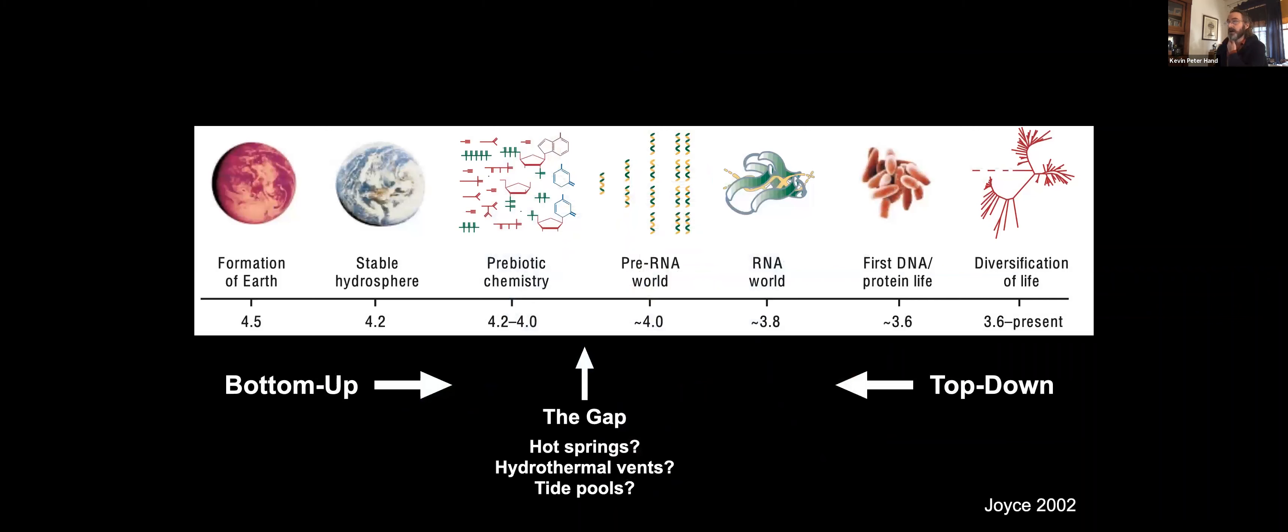Does that mean that DNA is likely to arise or might there be some other large information storage molecule that can arise under similar conditions? We don't know, but we can do this sort of last great experiment. In this diagram, you can see this kind of bottom up and top down approach for trying to understand life's origins. We can take the bottom up approach, looking at the formation of our planets and the stable hydrosphere and then some of the prebiotic chemistry, perhaps made most famous by the Miller-Urey experiments and many permutations of which have been examined in the subsequent decades.